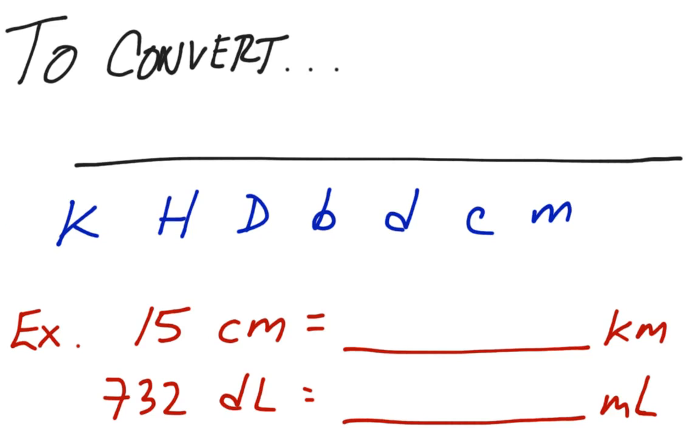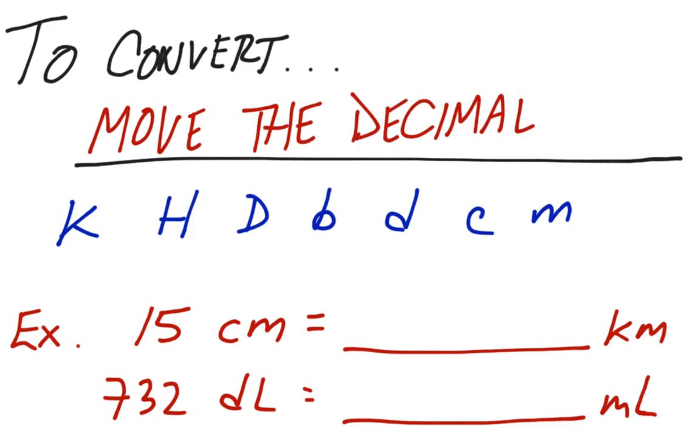So in order to convert, all we really have to do is move the decimal point. An old adage, an old saying, that helps most people remember how these things go in order is King Henry died by drinking chocolate milk, where we have kilo, hecto, deca, the base unit, that's no prefixes, deci, centi, and milli.